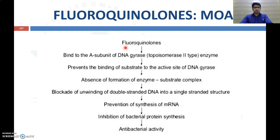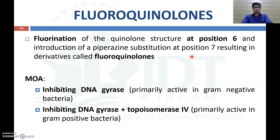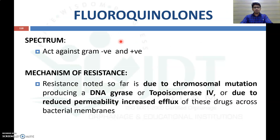Fluoroquinolones bind with the A subunit of DNA gyrase or topoisomerase 2 enzyme, preventing the binding of substrate to the active site. This results in the absence of enzyme-substrate complex formation, blocking unwinding of double-stranded DNA into single-stranded structure and preventing mRNA synthesis. This leads to inhibition of bacterial protein synthesis and produces a bactericidal action against both gram-negative and gram-positive organisms.